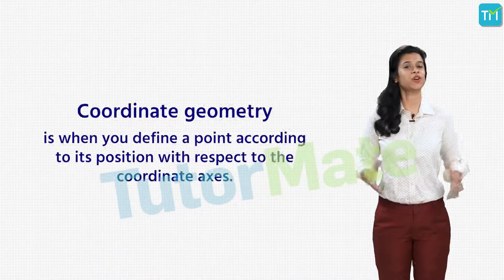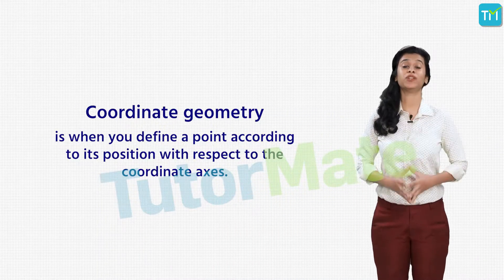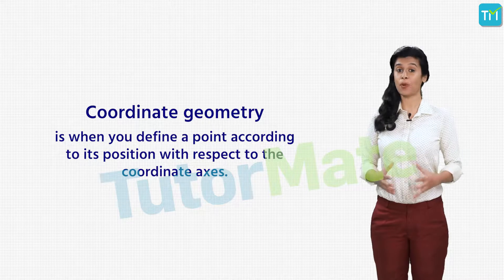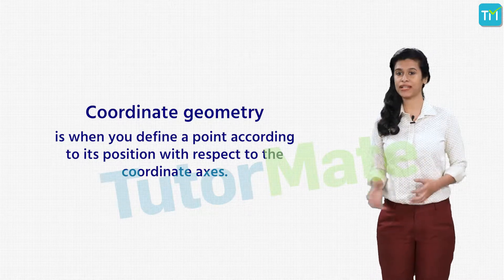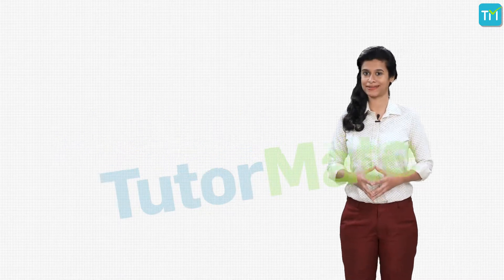Coordinate geometry. Coordinate geometry is when you define a point according to its position with respect to the coordinate axis. Sounds like a string of complicated words, doesn't it? Well, don't worry. In this chapter you will get a good idea of what coordinate geometry is all about.